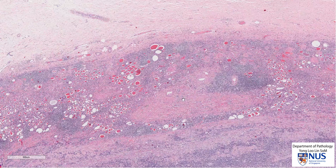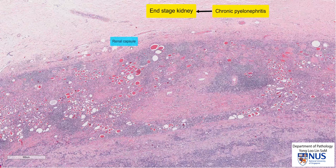This is a virtual microscopy slide taken from an end-stage kidney, secondary to chronic pyelonephritis. This is the renal capsule, and here is the renal cortex. We can see that the cortex is very much thinned.